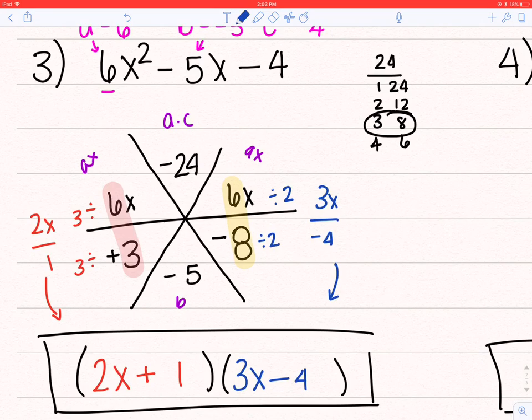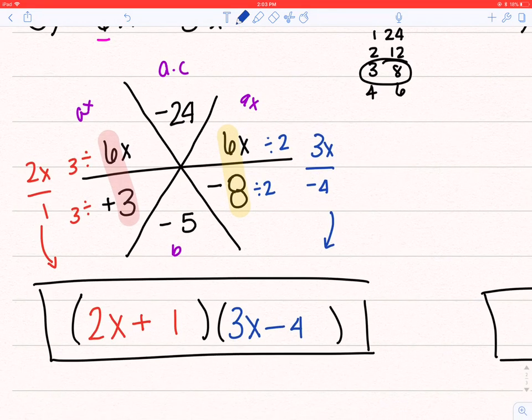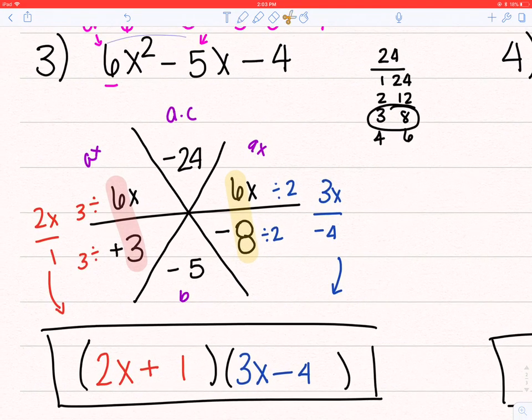So my factored form is 2x plus 1 times 3x minus 4. Again, the way I check it is I FOIL. I do first, outer, inner, last. Make sure that when I multiply it, it gives me the question.